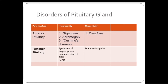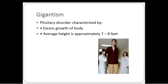From the posterior pituitary, we have the syndrome of inappropriate hypersecretion of antidiuretic hormone, and also diabetes insipidus. There are many other conditions arising from over or under activity of the pituitary, but we will not go into all of them in detail.